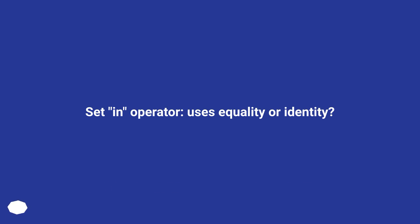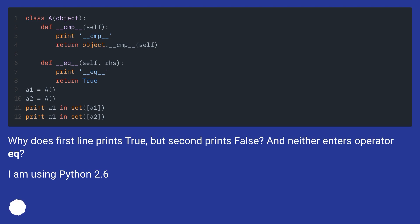The set operator uses equality or identity. Why does the first line print true but the second prints false, and neither enters the __eq__ operator? I am using Python 2.6.